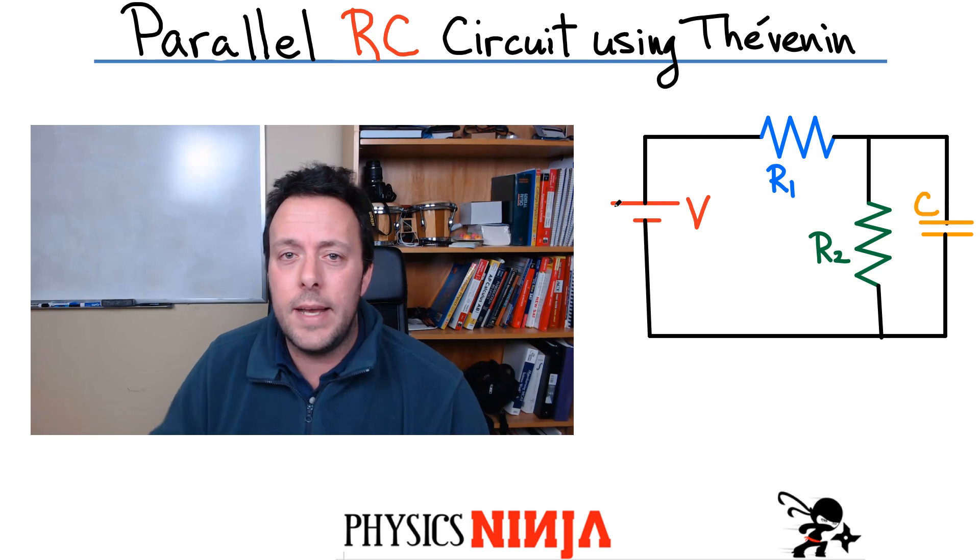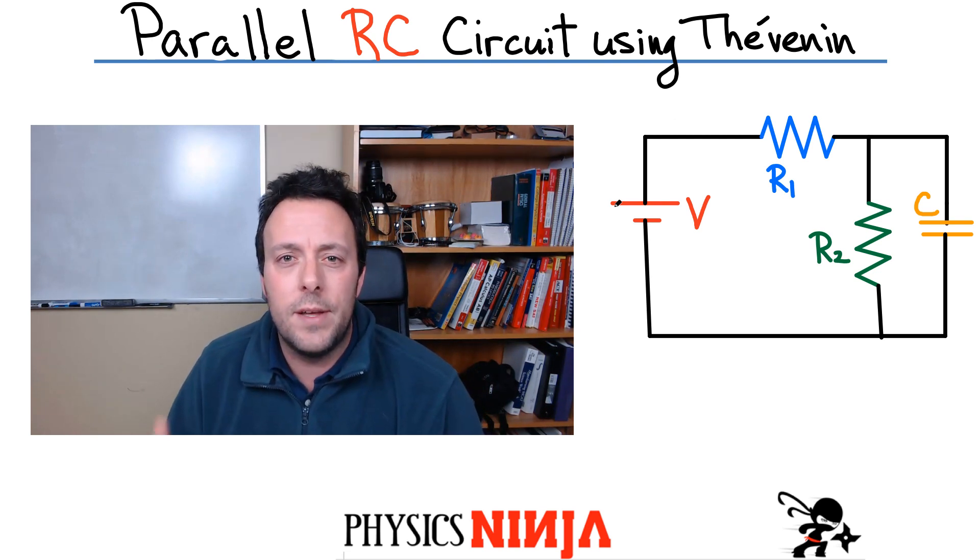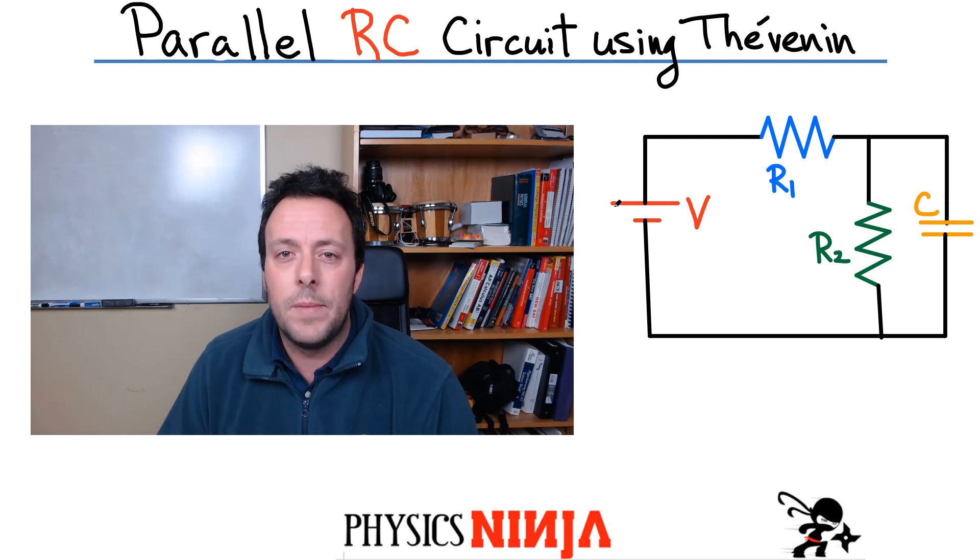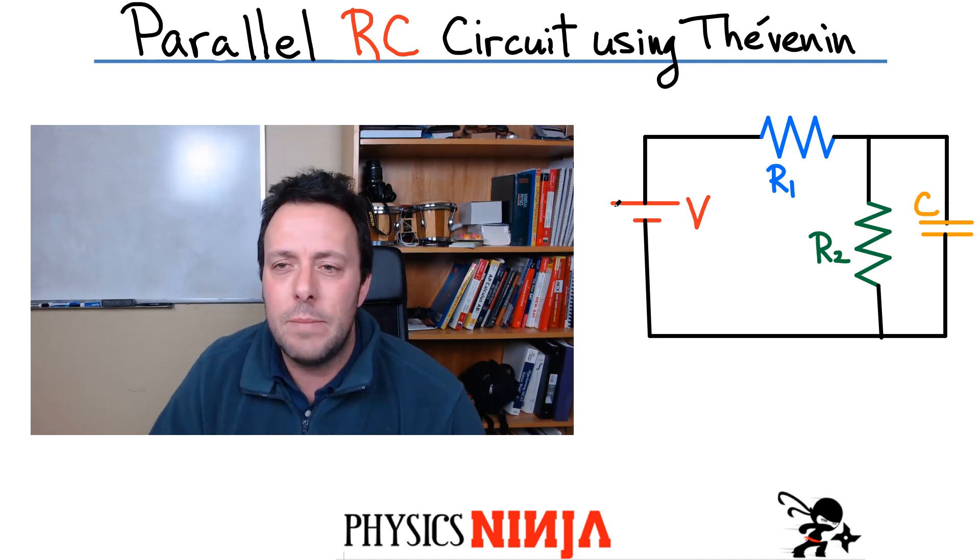Quite complicated approach. So what I'm going to do today, this is a request I had from a viewer. I'm going to show you how to solve the problem using an equivalent circuit in order to find the voltage across the capacitor as a function of time. So let me show you how to do this. It is the best method to solve this problem. Much better than the previous method I did.